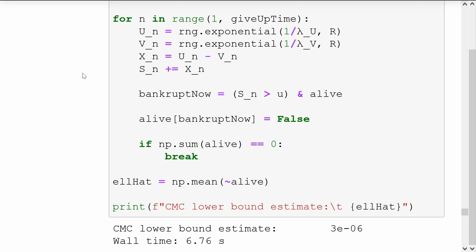Otherwise we get to the end of our computational budget and look at the fraction which have not survived, and we use that as our lower bound estimate for the infinite time ruin probability.